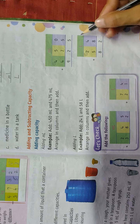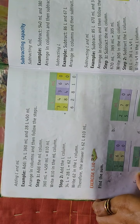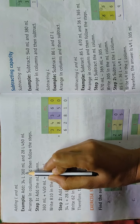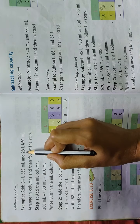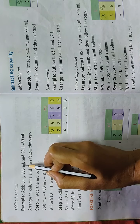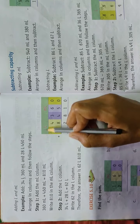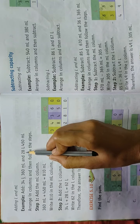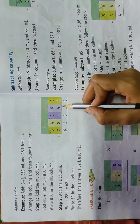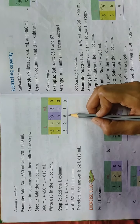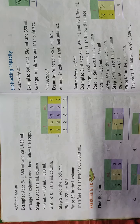Next, addition of liters: 24 liters + 58 liters. Make a column labeled liter, put the values, and after addition the answer is 82 liters. Then addition of liters and milliliters together: 34 liters 360 ml + 28 liters 450 ml. Make two columns — liter and milliliter. After addition the answer is 62 liters 810 milliliters.